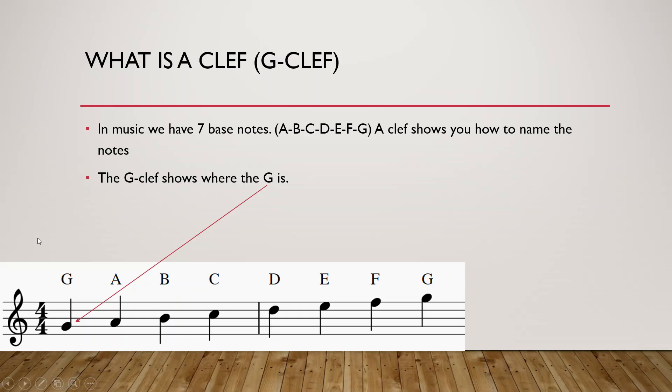The most important two clefs are the G clef, also referred to as the violin clef, and the F clef, also referred to as the bass clef. We also have the C clef but that's not that important — that's for another time. So first let's take a look at the G clef.